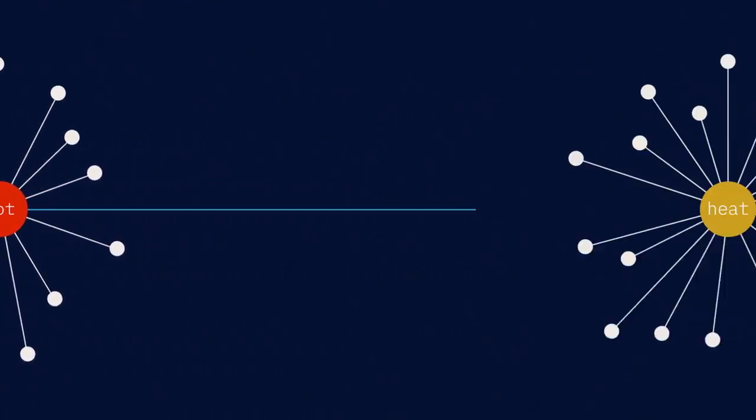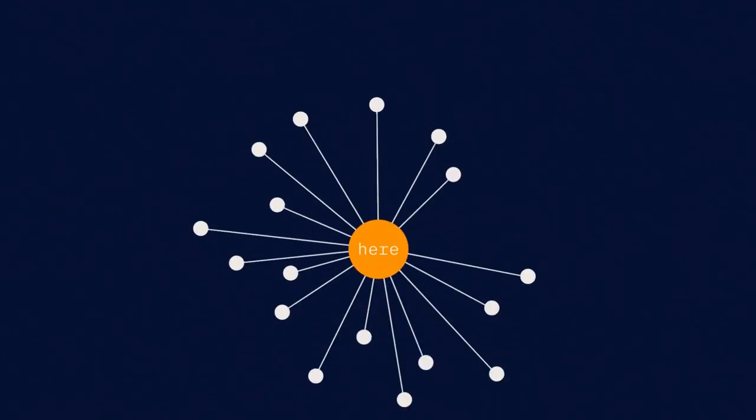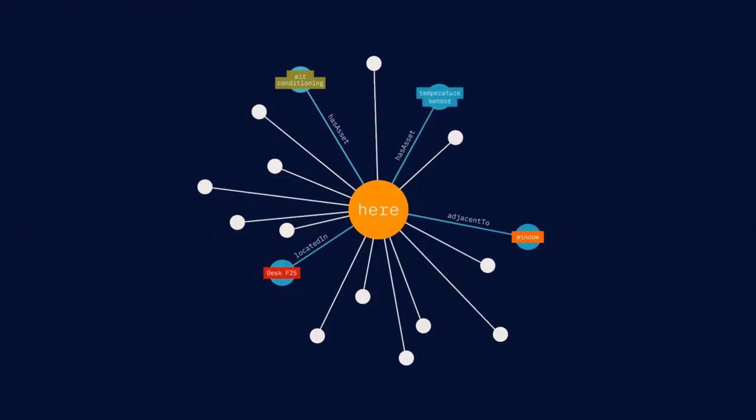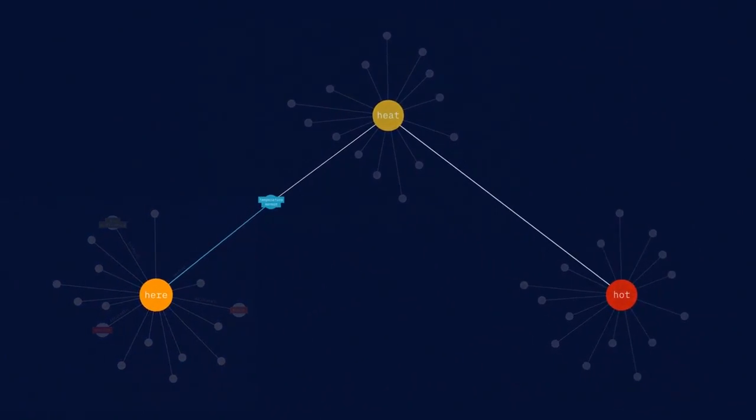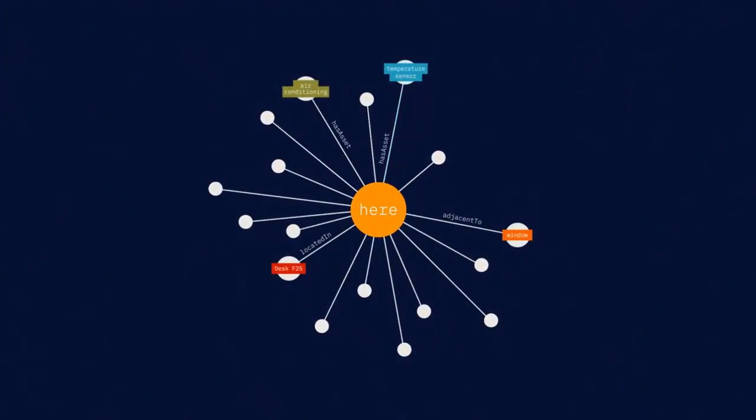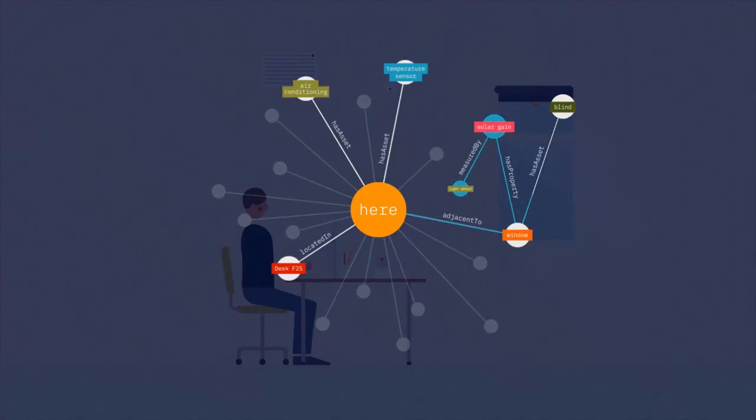It understands that hot is a concept for heat. It quickly accesses the knowledge graph to find all assets in the area. It then uses AI analytics and sensor data to determine if the temperature is actually too high. It realizes the office area is located close to a window. It checks the illumination sensor, automatic blinds and weather to see if there is high sunlight causing excessive temperature and finds nothing unusual.